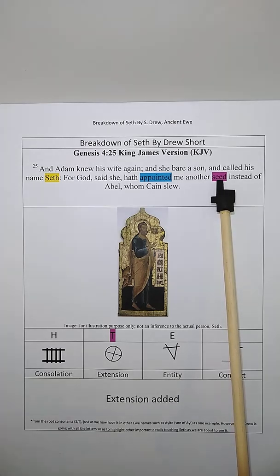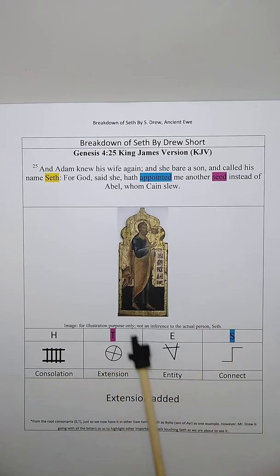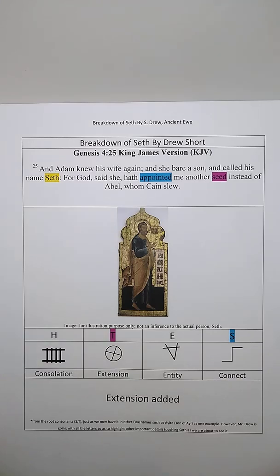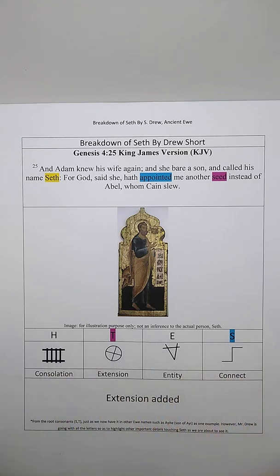The T means an extension. Seth going out from Adam and Eve, or Seth being an extension of Adam and Eve, is a child or being their son. It is expressed by the letter T as we have it in the name. However, Mr. Drew is going with all the letters so as to highlight other important details touching Seth.